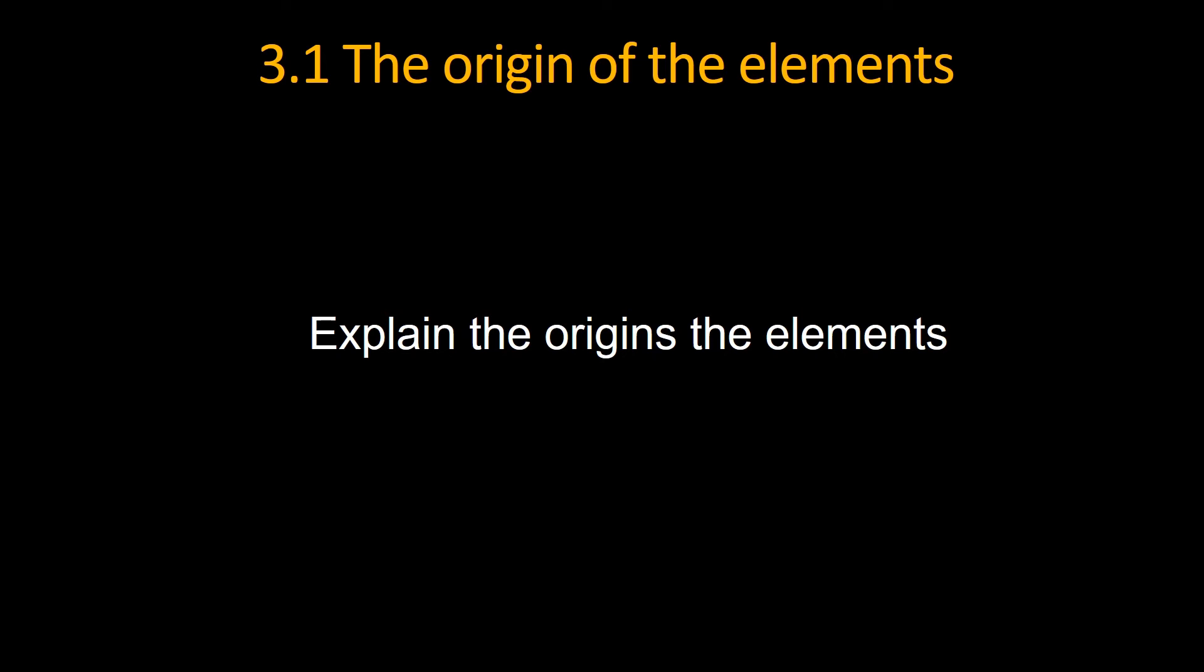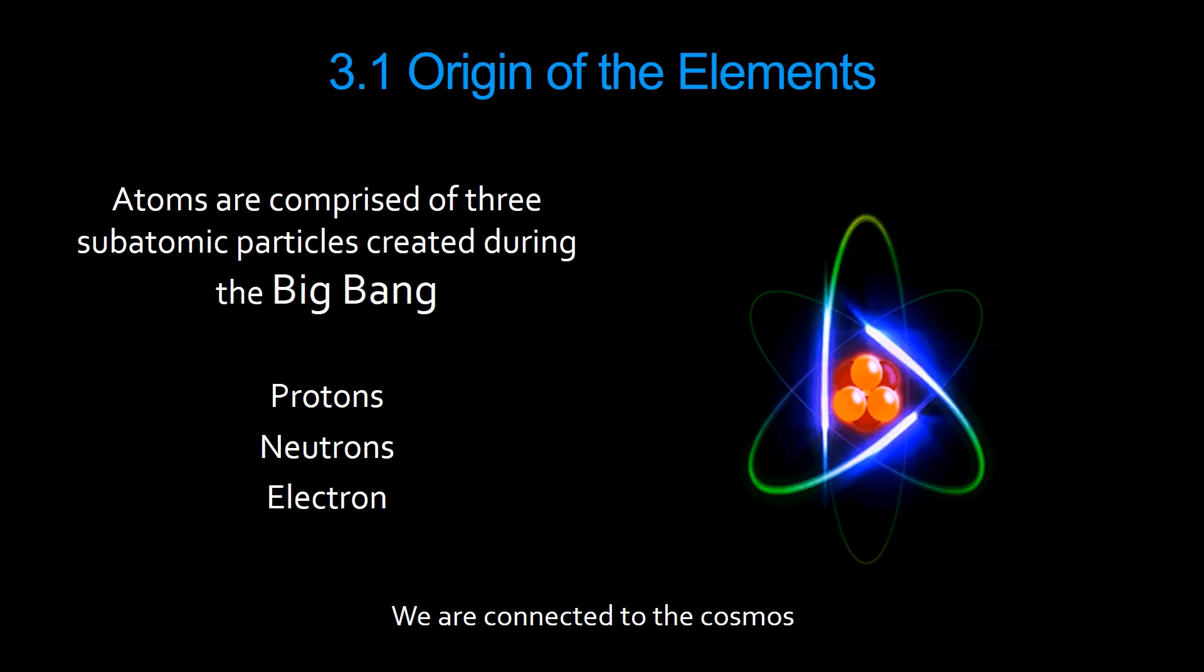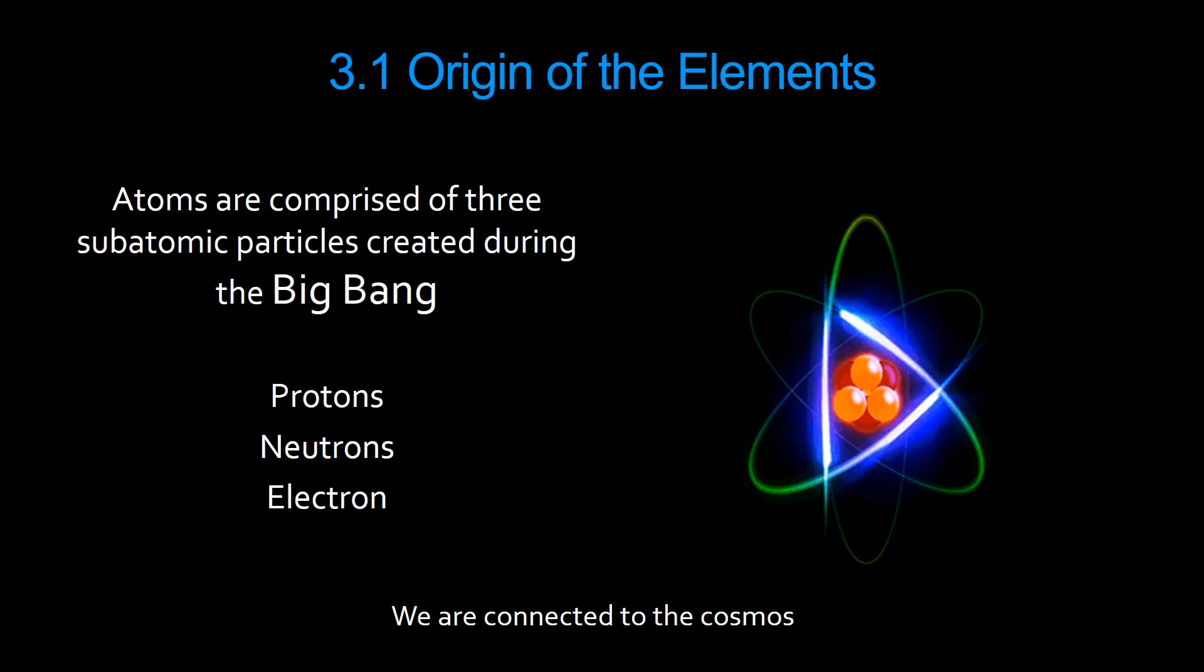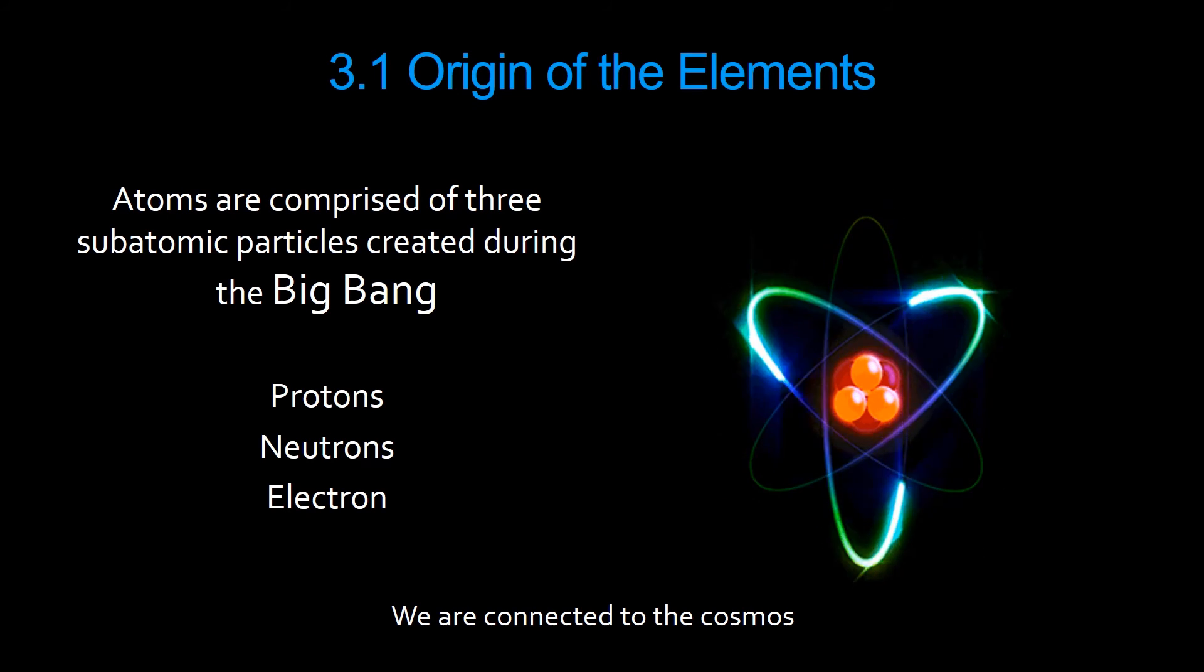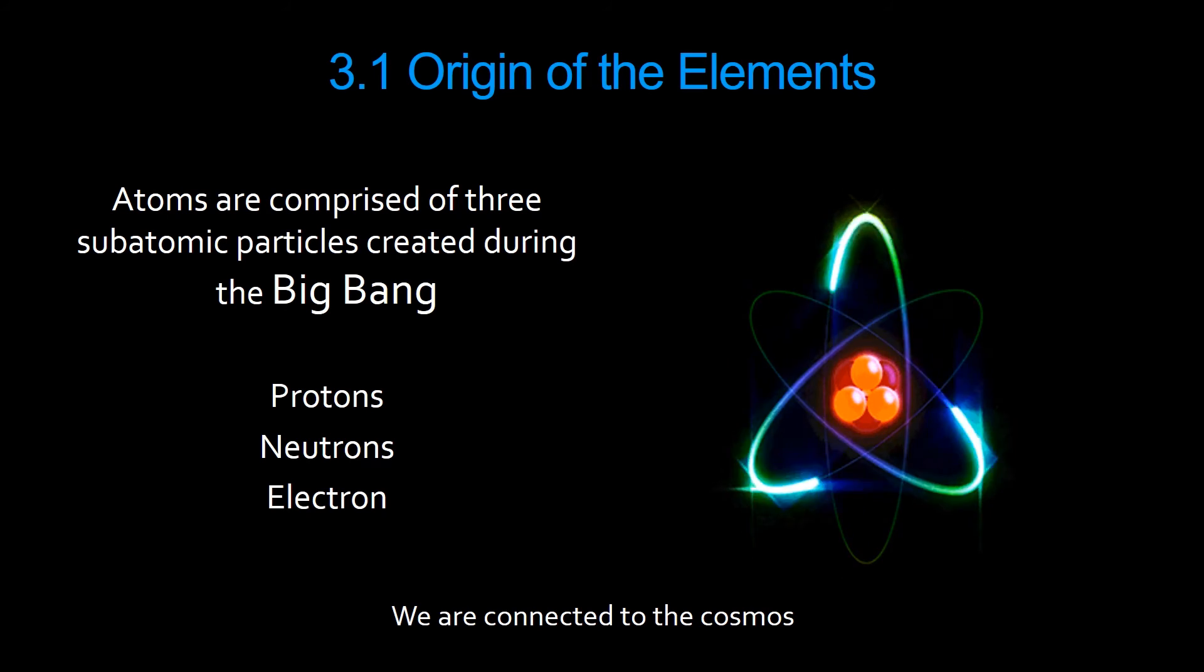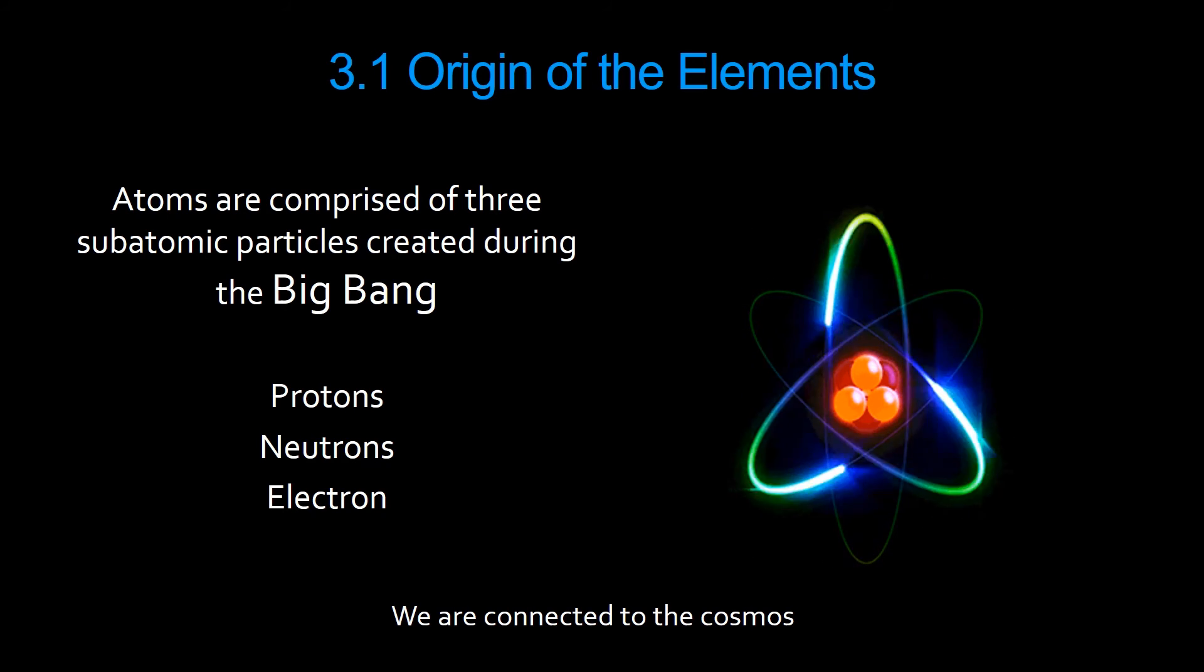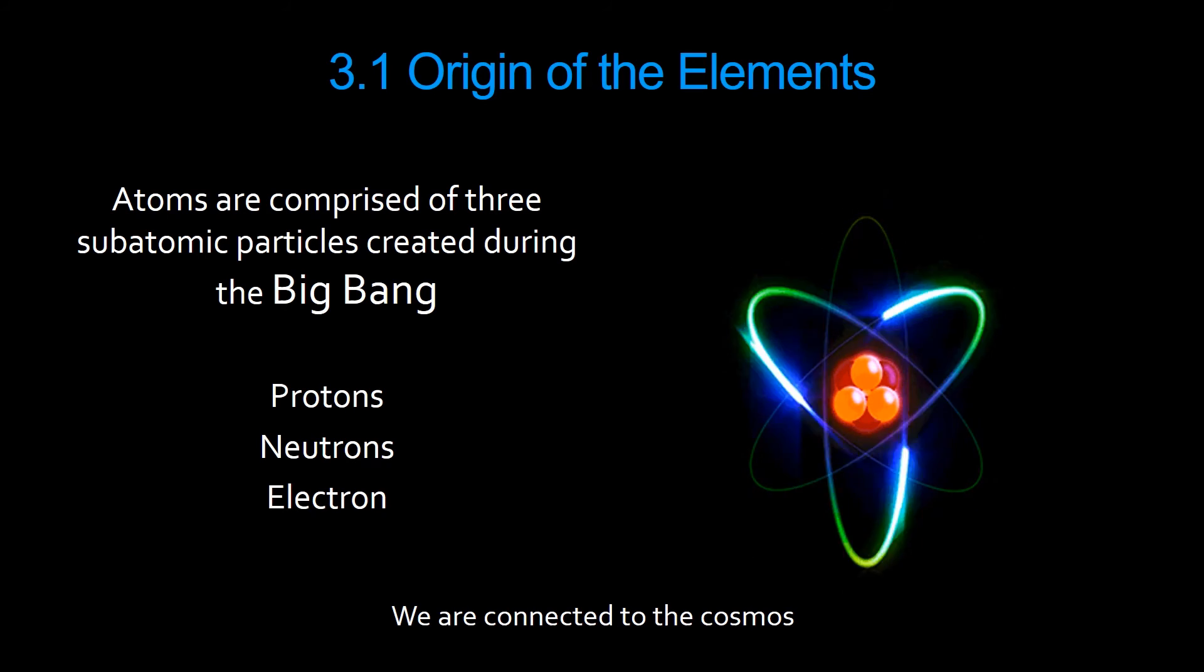As we move on now, I want to talk about the origins of the elements. Elements are atoms, and atoms are made up of three subatomic particles: protons that have a positive charge, neutrons that have a neutral charge, and electrons that have a negative charge.